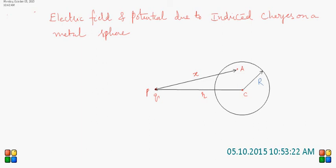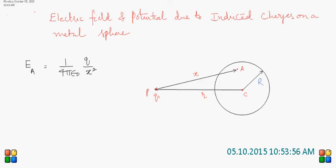What is the electric field intensity at point A at a distance x due to a point charge? We know that due to a point charge, the electric field at point A is given by: E at point A equals 1 over 4π ε₀ times Q over x squared. This is equal to KQ over x squared. This is the electric field intensity at point A due to charge Q.